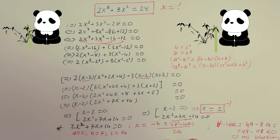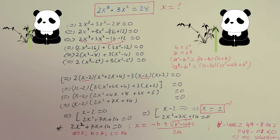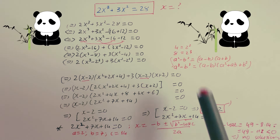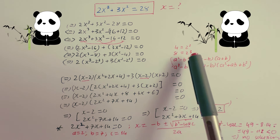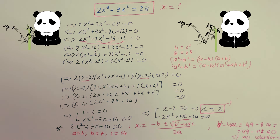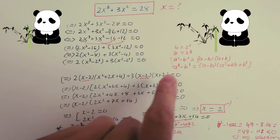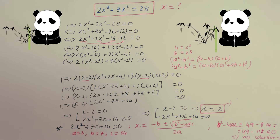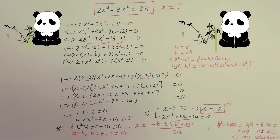So x equals 2 is the only solution for this equation. That's finished — hope you understand it. Just remember the two formulas: a squared minus b squared equals (a minus b)(a plus b), and a cubed minus b cubed equals (a minus b)(a squared plus ab plus b squared). Thank you for watching. Bye bye!